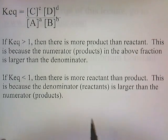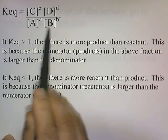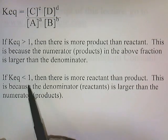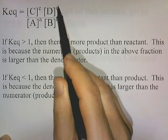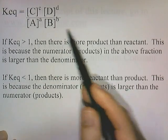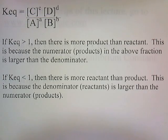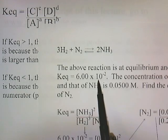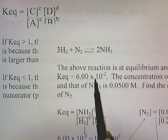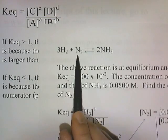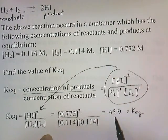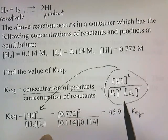The denominator — the reactants — is larger than the numerator, meaning Keq is less than 1. When Keq is less than 1, the number on the bottom is bigger than the number on top, so there are more reactants than products. In the last problem, Keq was 6×10⁻², telling us there's more reactant — more H2 and N2 — than product NH3. In the other problem, Keq was 45.9, which tells you there's more product than reactant.